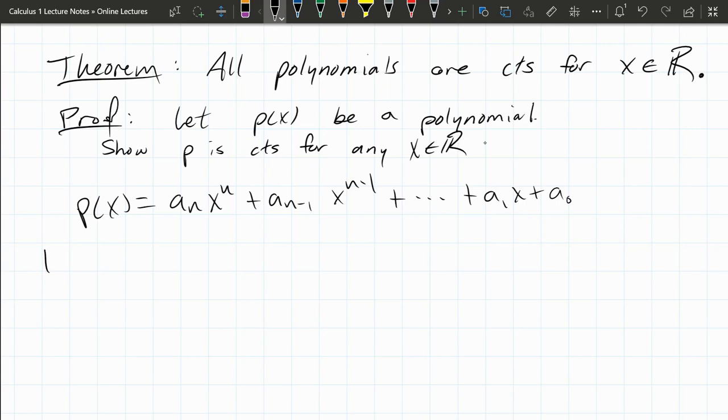Now we're going to take the limit as x approaches—we'll just use some number b. I didn't want to use a because in the standard way we write polynomials, we use a for the coefficients. We're taking the limit of this. But remember, the limit splits up across all of the addition. It also splits up across the multiplying of coefficients into the x's.